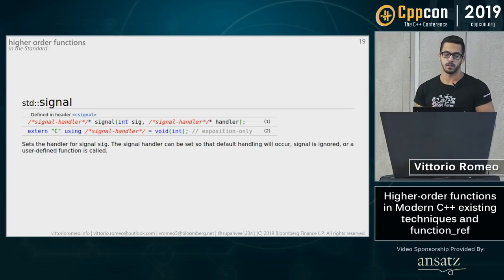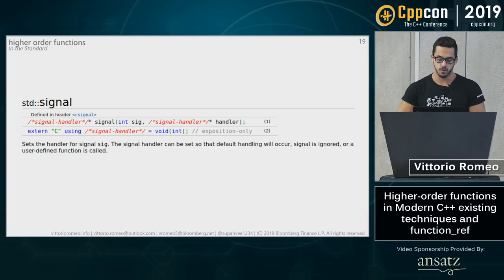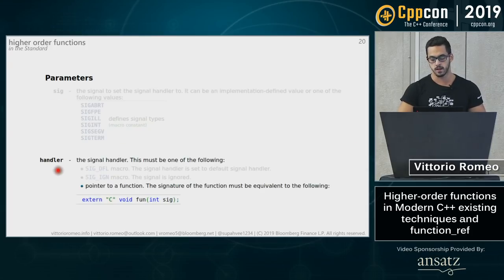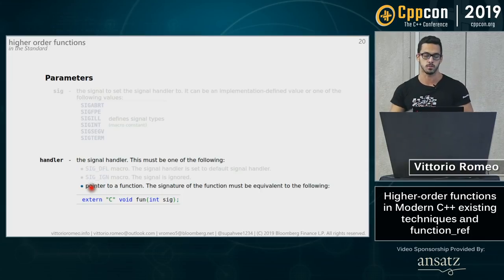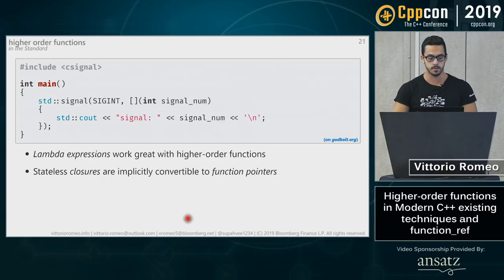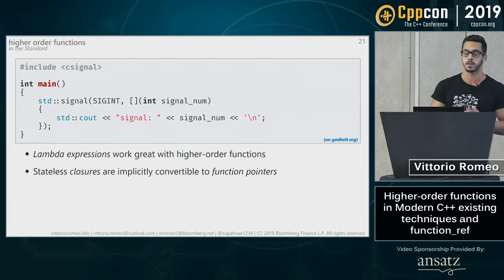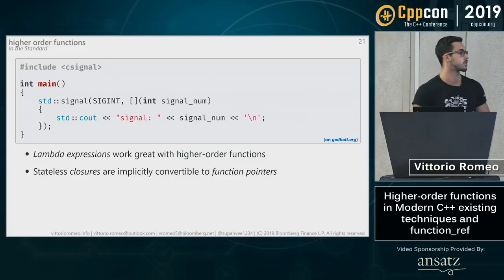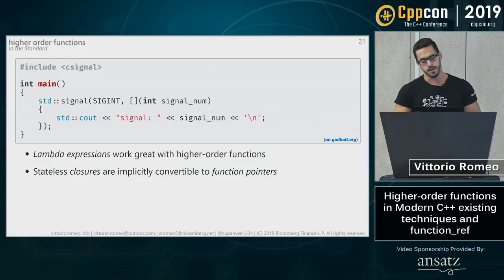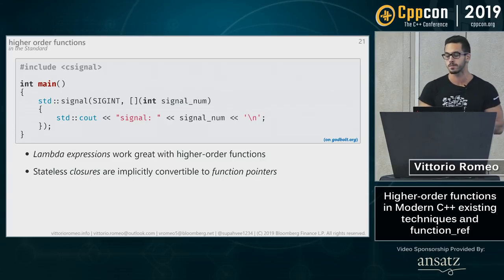The signal function's signature is quite implementation-defined — it takes a signal and a handler, which must be a pointer to a C function taking an int and returning void. As an example, we can call std::signal with SIGINT and pass a stateless lambda, which is implicitly convertible to a function pointer. This shows that lambda expressions and higher-order functions work really well together — though technically, printing inside a signal handler is undefined behavior.